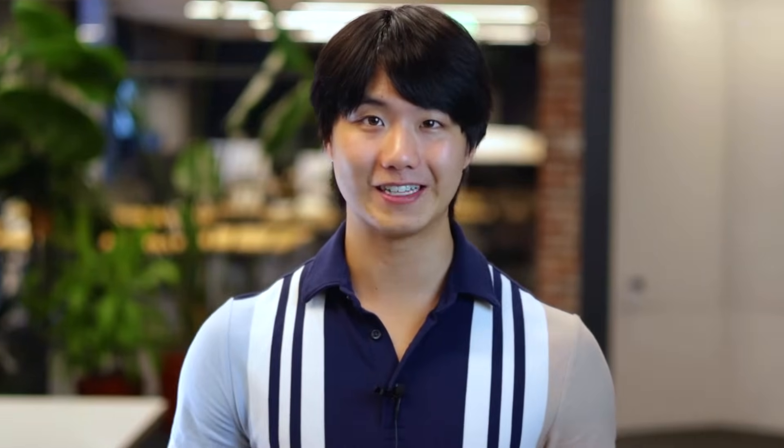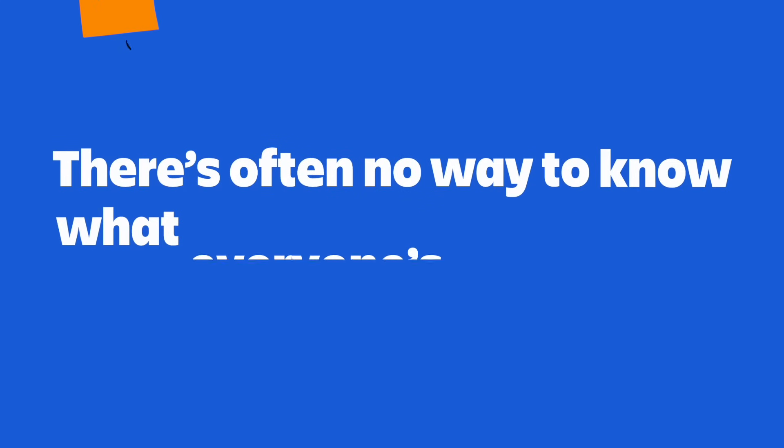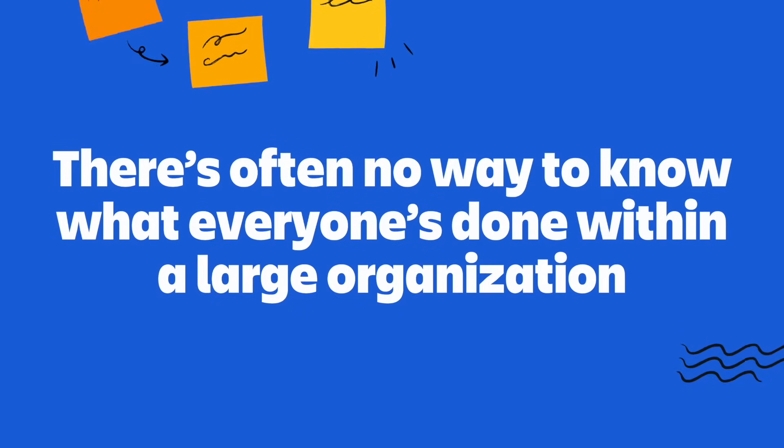This allows Confluence to almost act as a digital library of information, which is extremely helpful for a couple of reasons. The first benefit is reduced redundancy. If you've worked at a company before, you could probably relate to this scenario where you're super excited to begin a new project, you put all this time doing research to lay a strong foundation, and then lo and behold, someone from a completely different team did the exact same work just two years ago. Simply put, there's often no way to know what everyone has done within an organization of thousands of people. However, with Confluence, you essentially have a library of information of what everyone has worked on and researched over the past however many years. So before starting any project, you could do a quick Confluence search and see if anyone has worked on something similar or if there's past research that you can learn from.